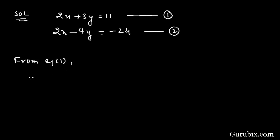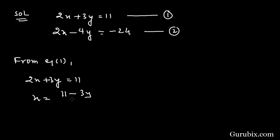From equation number 1, we have 2x plus 3y equals to 11. We shall write the value of x in terms of y, so x equals to 11 minus 3y over 2. Now we shall put this value into equation number 2.